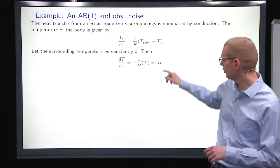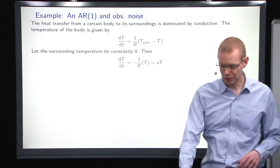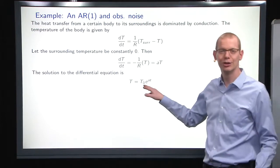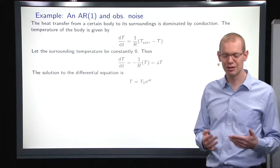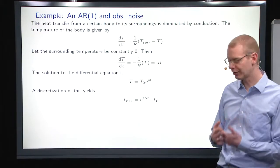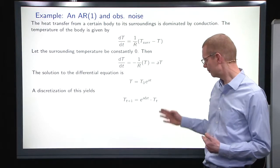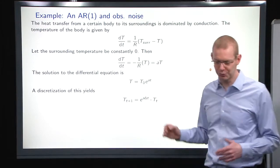Let's assume that the surrounding temperature is zero. Then we have a very simple equation here with a solution that I guess you've all seen before, just the exponential function from an initial state. If we discretize this to get into discrete time, basically we have this model here.